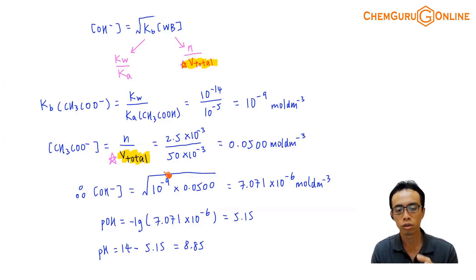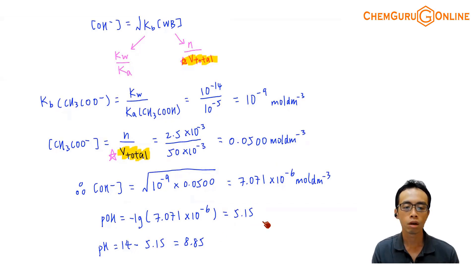I can substitute back into this equation, the formula for me to find the pH of a weak base. OH⁻ concentration, I can get this: 7.071 times 10 to the power of minus 6. I can find pOH. I can find pH.